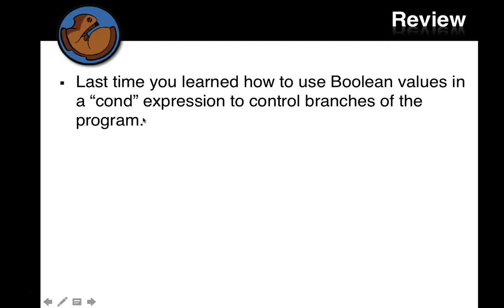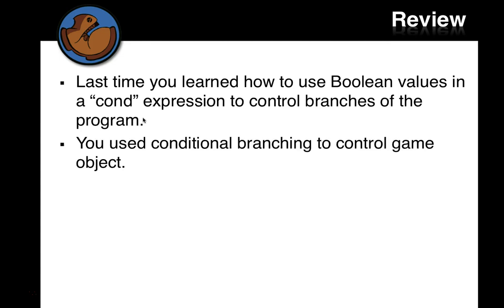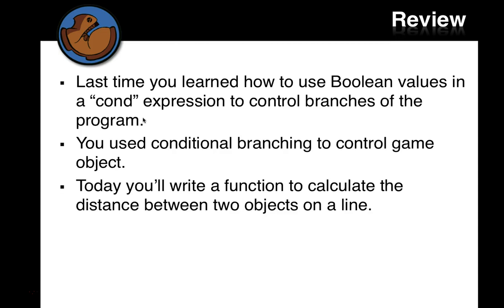Last time you learned how to use Boolean values in a cond expression to control branches of the program, and this is a really powerful new technique that's pretty much going to let you do anything you need to do in your game. You'll also use conditional branching to control game objects. Today we'll write a function to calculate the distance between two objects on a line, because the big thing this week is going to be creating a collide predicate that tells you when two objects hit each other.